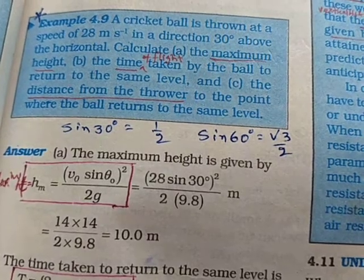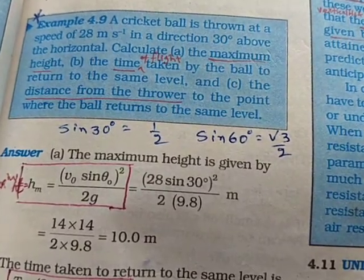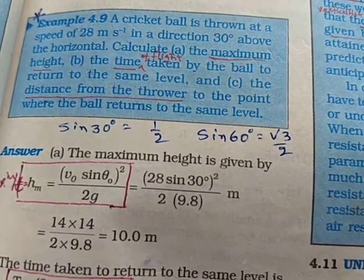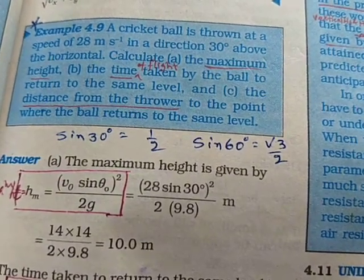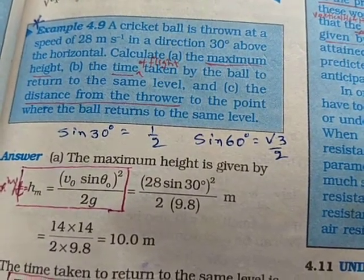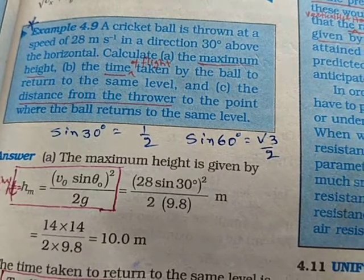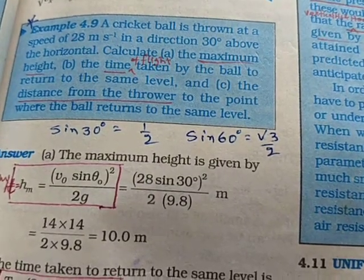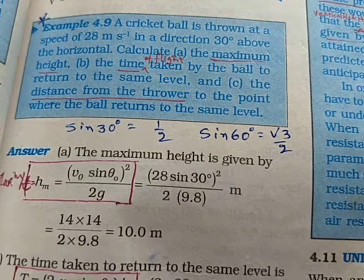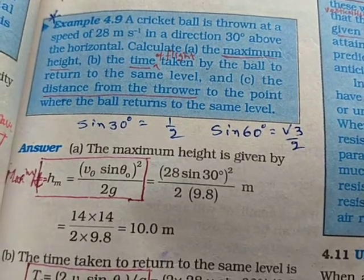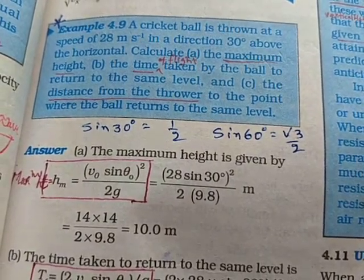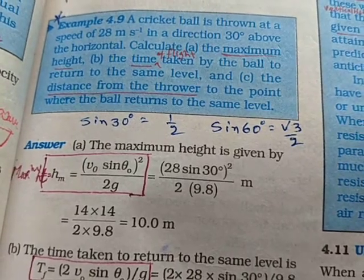And then we have to calculate the maximum height that the ball will reach and the time taken by the ball to return to the same level after it is being thrown. And thirdly, the distance covered along the horizontal direction in this time.